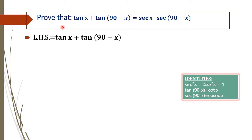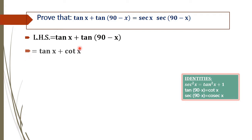We have to change this LHS into sec x into sec of 90 minus x. In order to do this, first consider the trigonometric identity that is tan of 90 minus x equal to cot x. So this equation will become tan x plus cot x.